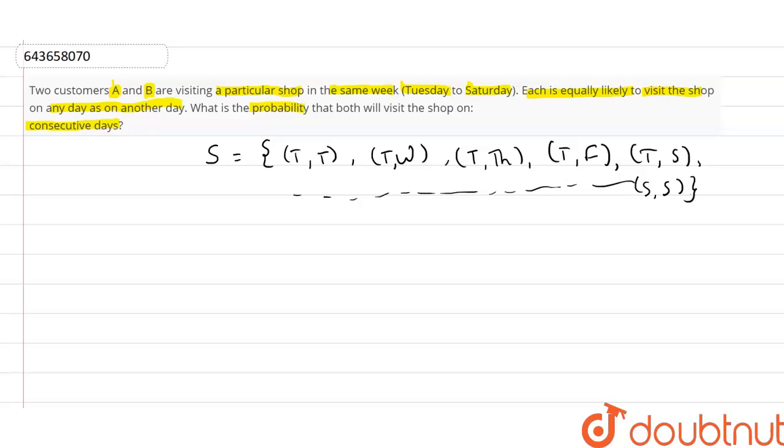Now the number of favorable outcomes that are consecutive days. Let event E be the number of favorable outcomes.